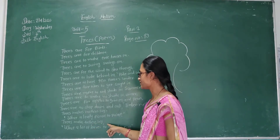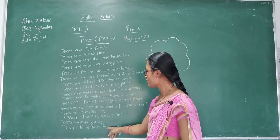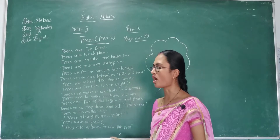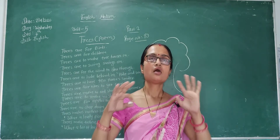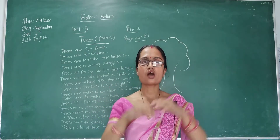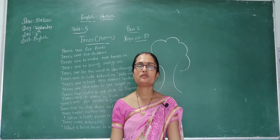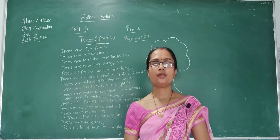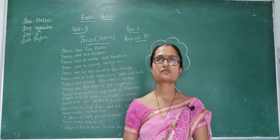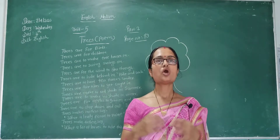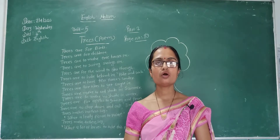Trees make fathers say: What a lot of leaves to rake this fall! If the wind blows fast, the tree's leaves fall down like a carpet under the tree. So trees are very beautiful. We must grow more and more trees because trees are very useful to us.